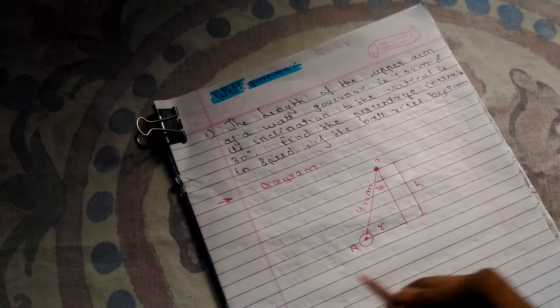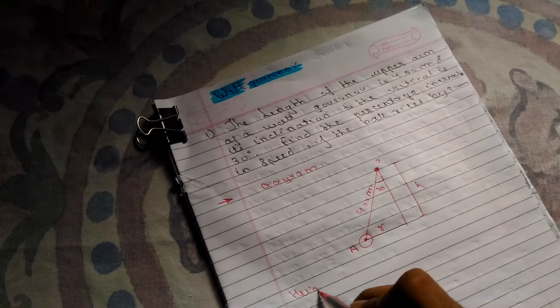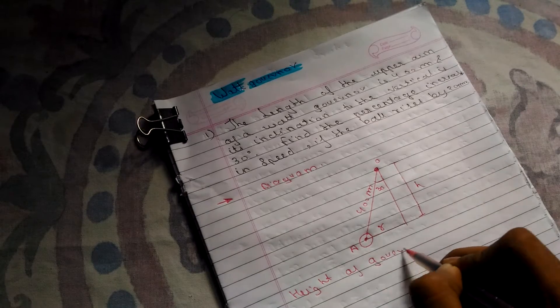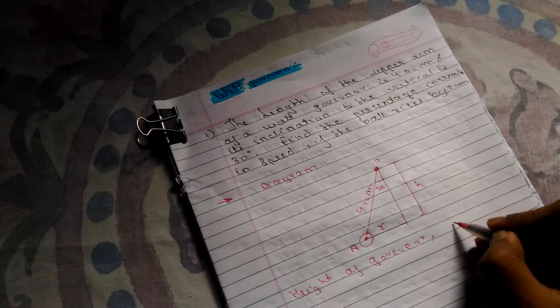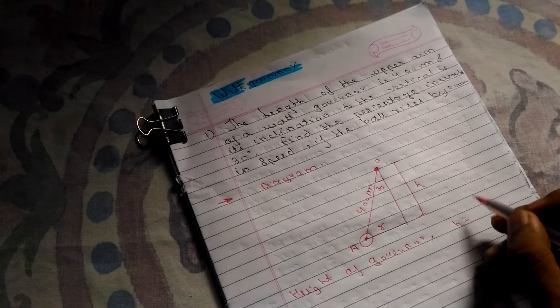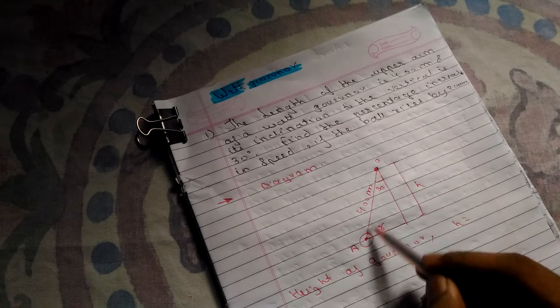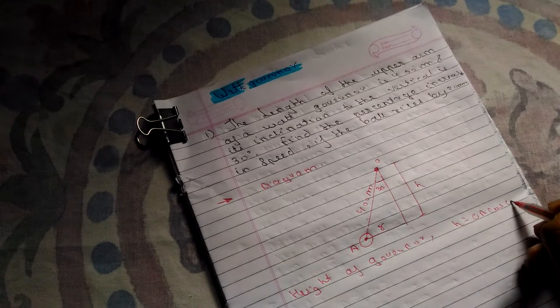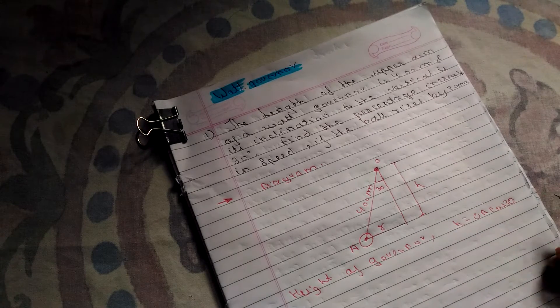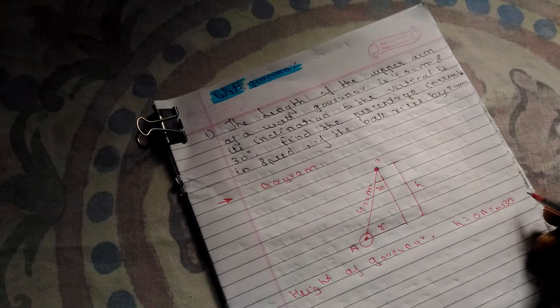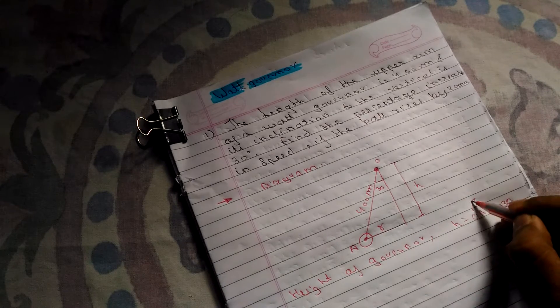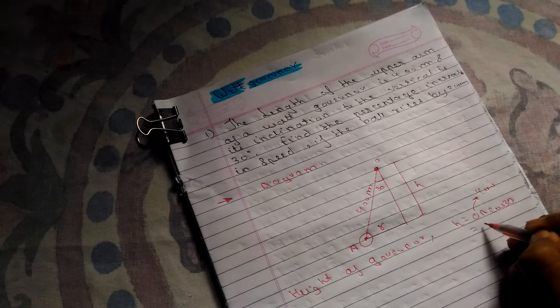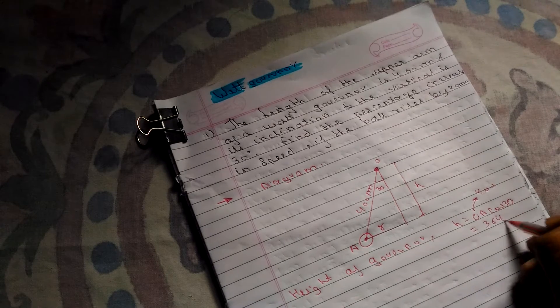We can write the height of the governor, H, as H equals OA cos 30. OA cos 30, where OA equals 400 and cos 30, so H equals 364 mm.